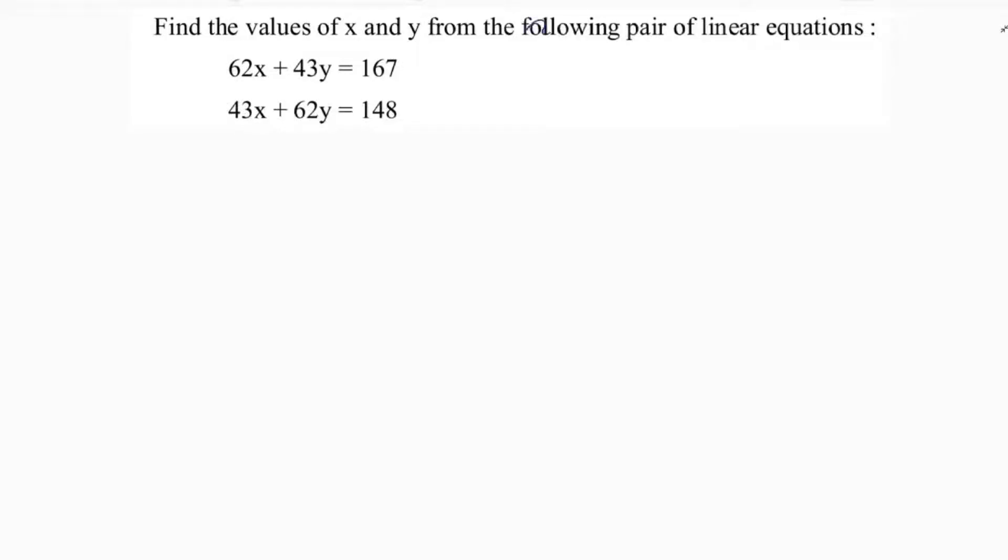Find the values of x and y from the following pair of linear equations. Here, 62x plus 43y equals 167, and the other equation is 43x plus 62y equals 148.